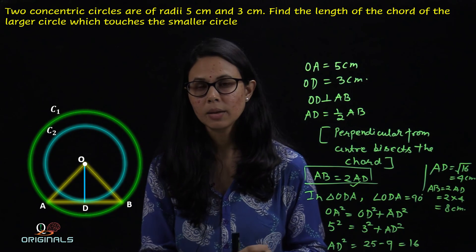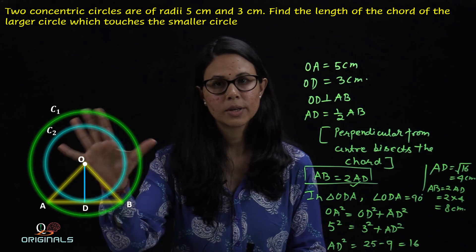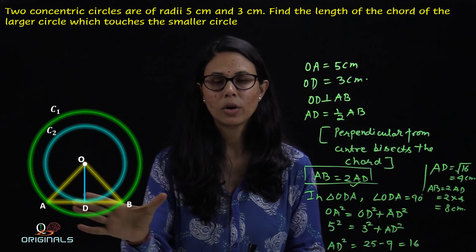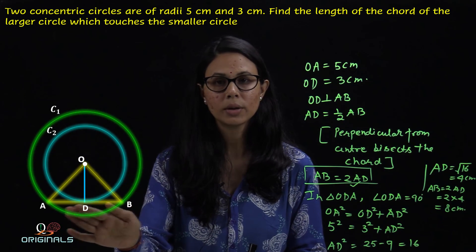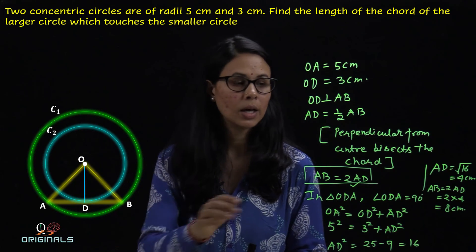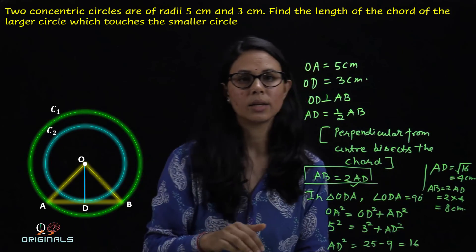तो जो chord AB है — first circle C1 के लिए chord AB है, और second circle C2 के लिए tangent AB है — उसकी value 8 cm है.